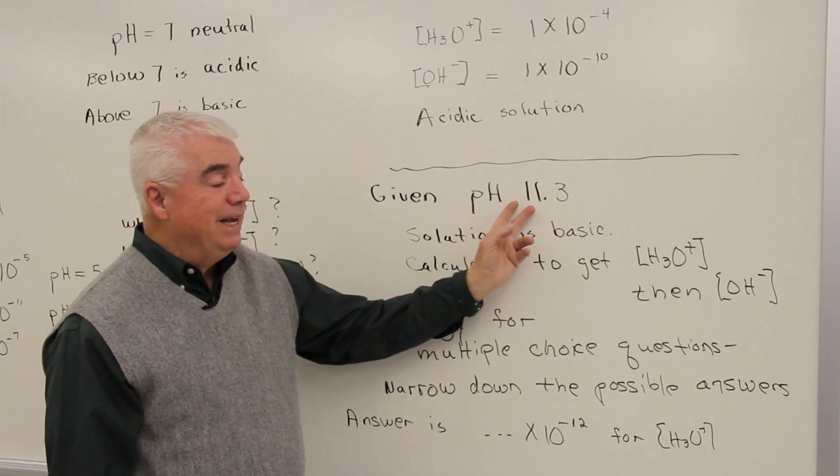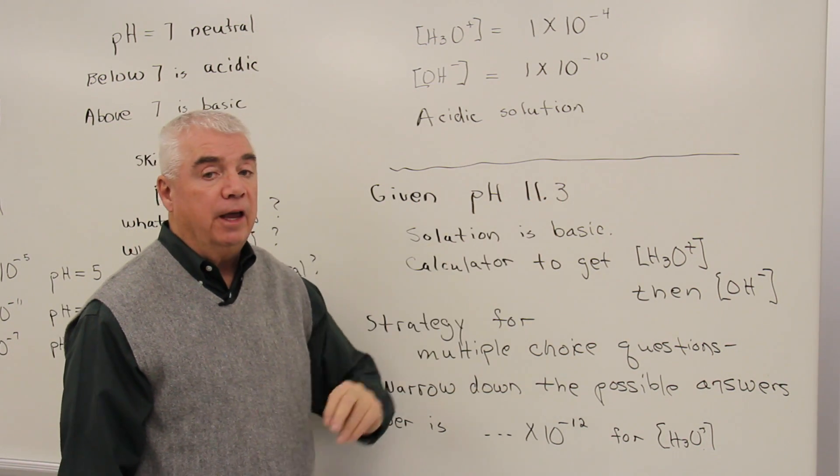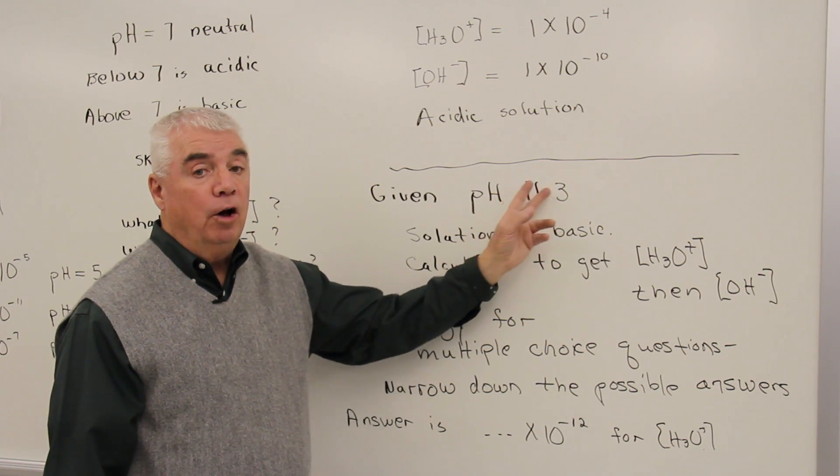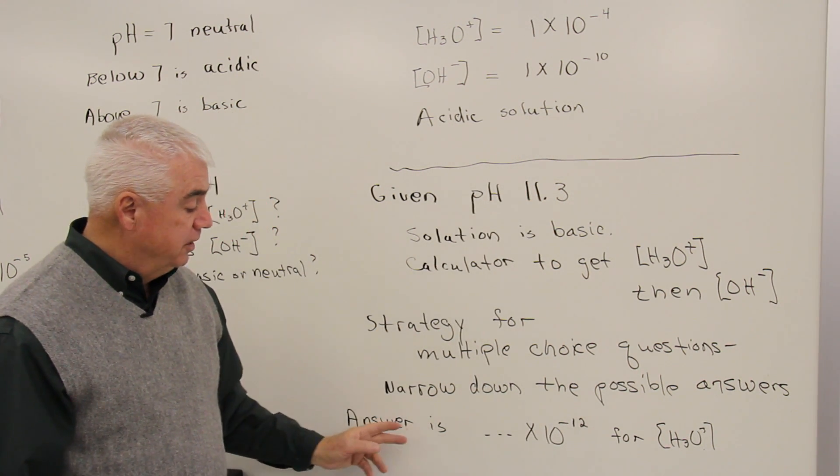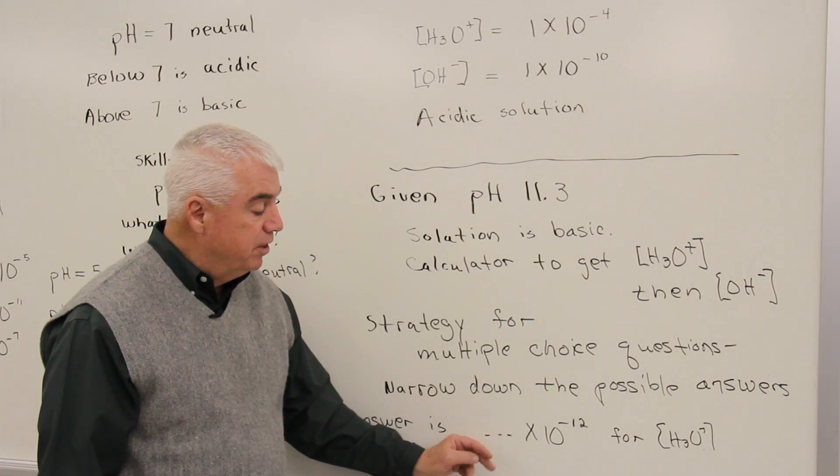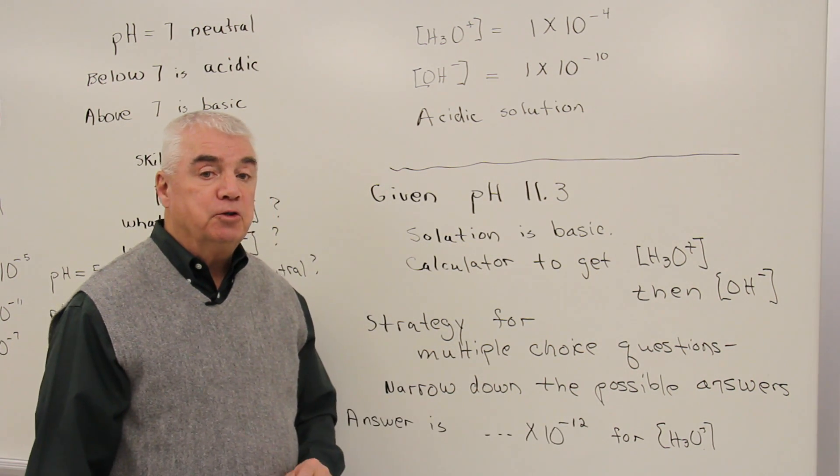I know that if the pH is 11 something, that we're in the neighborhood of H3O plus concentration being 11 or 12. And so here's the answer that I'd look for. It's something times 10 to the minus 12.